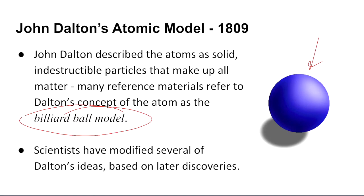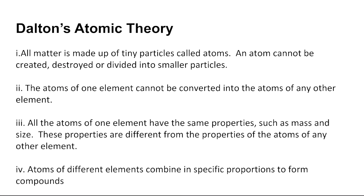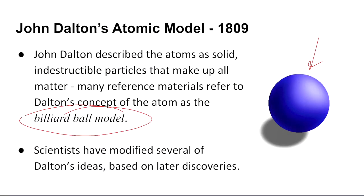Scientists have modified several of Dalton's ideas on later discoveries. Dalton came up with these theories. You can look at the four theories. He said that all atoms are made up of tiny particles called atoms, and that atoms cannot be created, destroyed, or divided into anything smaller. All the atoms of one element have the same properties, such as mass and size. These properties are different from the properties of the atoms of any other element. And lastly, atoms of different elements combine in specific proportions to form compounds, all based on this billiard ball model.